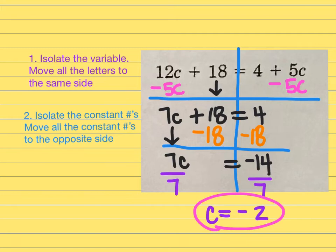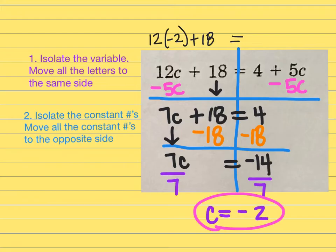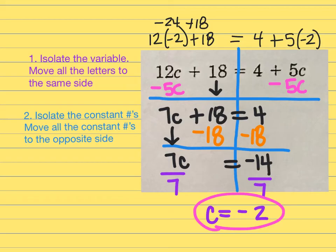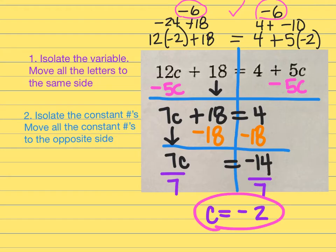To check my work, I substitute c equals negative 2 back into the original equation. On the left: 12 times negative 2 plus 18 equals negative 24 plus 18, which is negative 6. On the right: 4 plus 5 times negative 2 equals 4 plus negative 10, which is also negative 6. Negative 6 equals negative 6— that's how I check it.